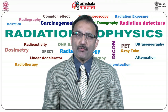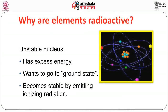The important question which comes to mind: why are elements radioactive? We know there are unstable nuclei — unstable nucleus means they have excess energy. As a law of nature, everything wants to go to the ground state. This unstable nucleus, which has excess energy, would like to come to a ground state, and thus when it does, it emits different kinds of radiations. The radiation emitted while coming from an unstable state to a ground state are ionizing radiations.